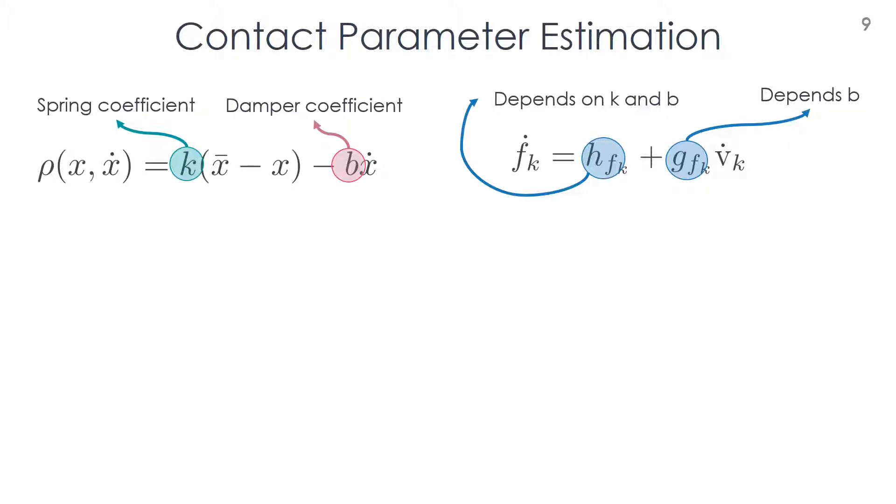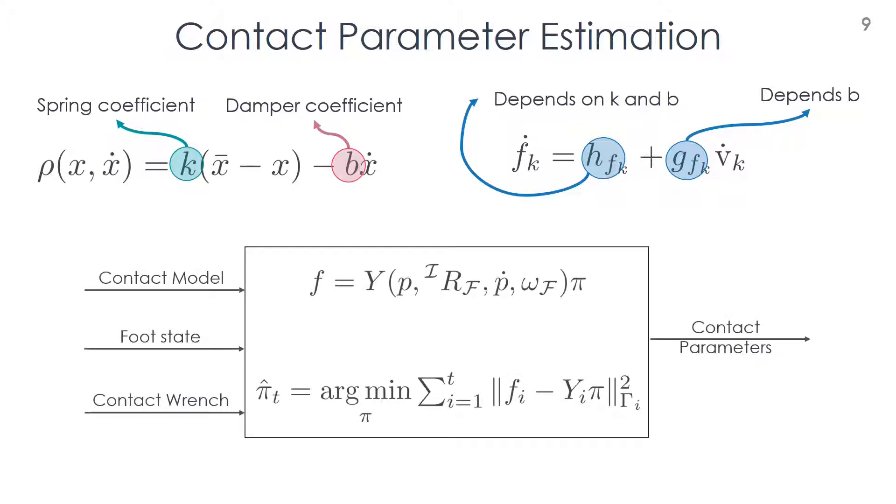The contact model is linear with respect to the contact parameters, so we aim to estimate them such that the least-square criterion is minimized.